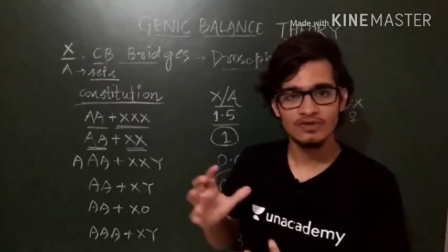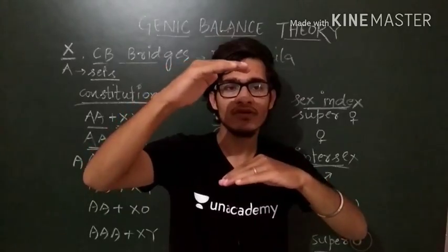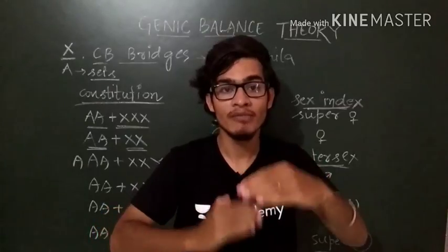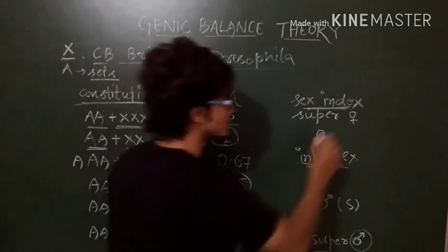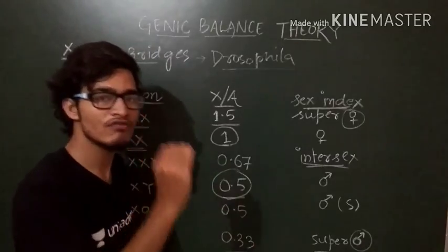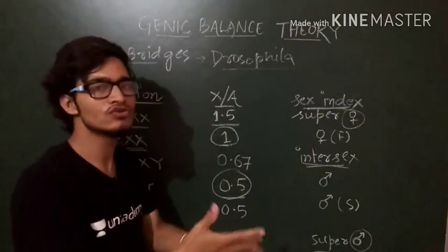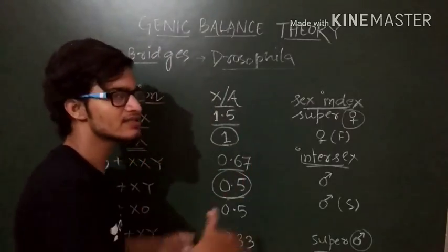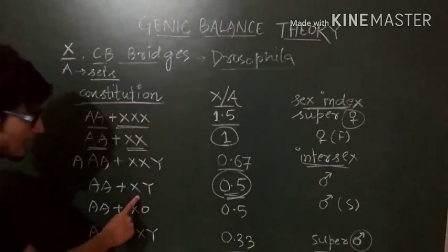So what is the basic criteria? 0.5 is the male, 1 is the female. In between 0.5 and 1, there are intersex. Above 1, there is super female. Below 0.5, super male. So let's talk about this: 1.5, more than 1, it is super female without any confusion. 1, normal female which is fertile, normal female. Super females are usually sterile; they cannot reproduce.